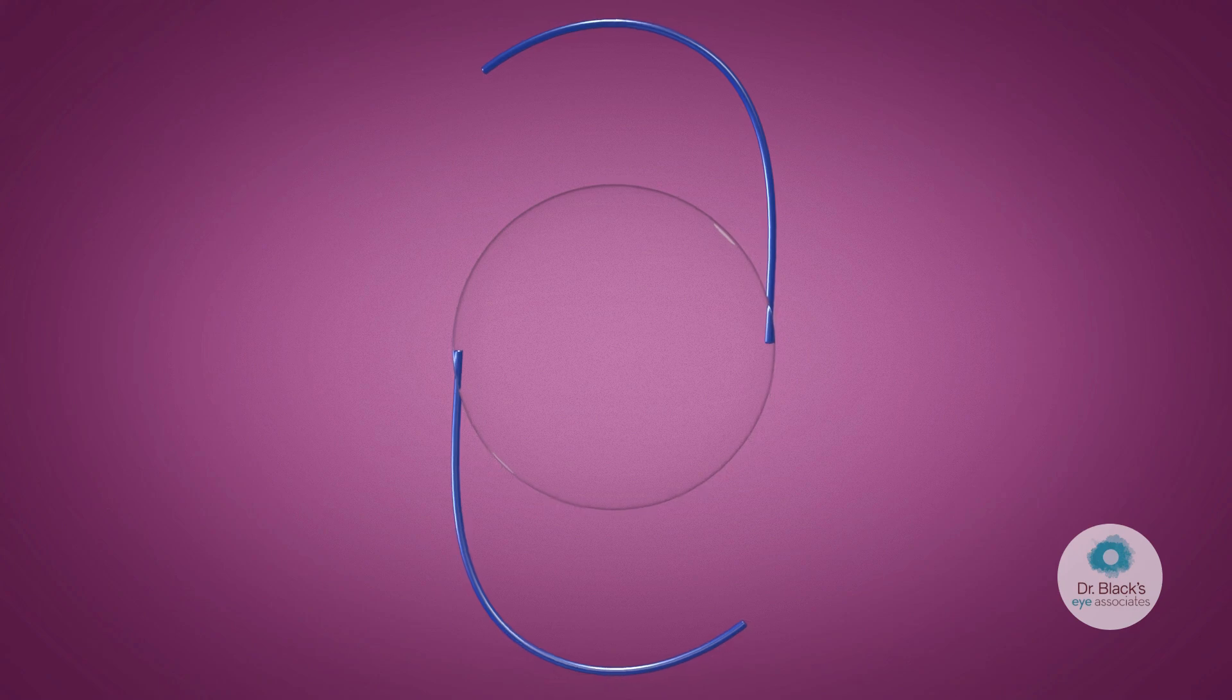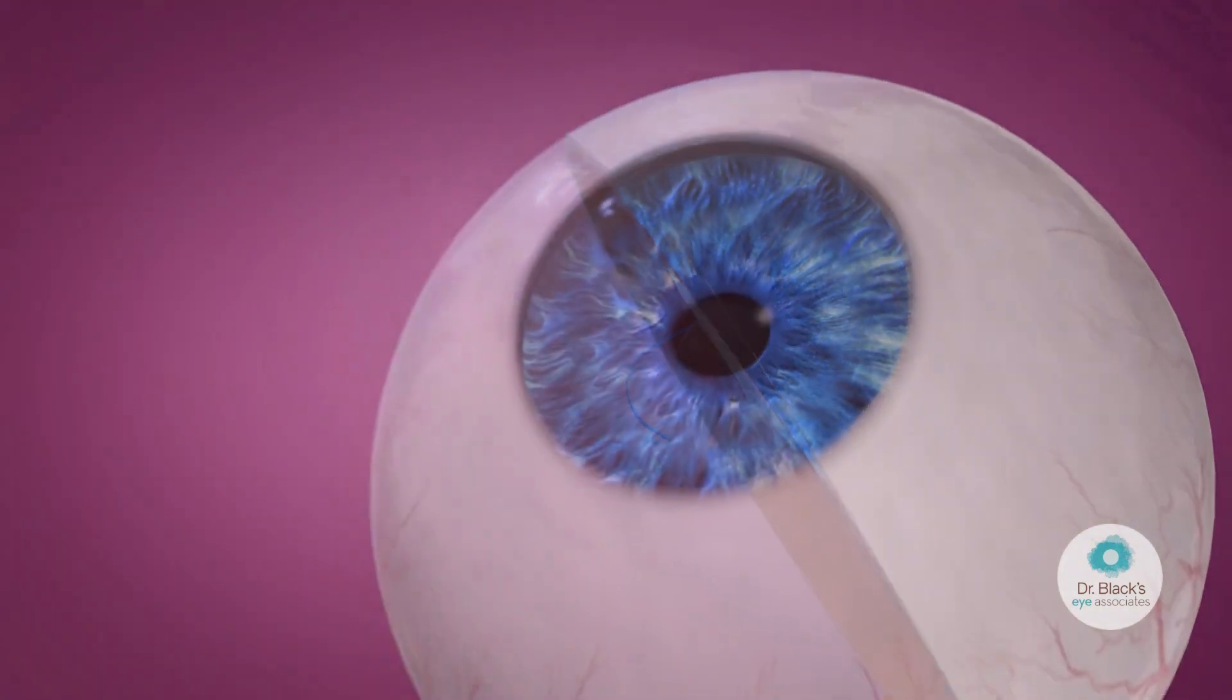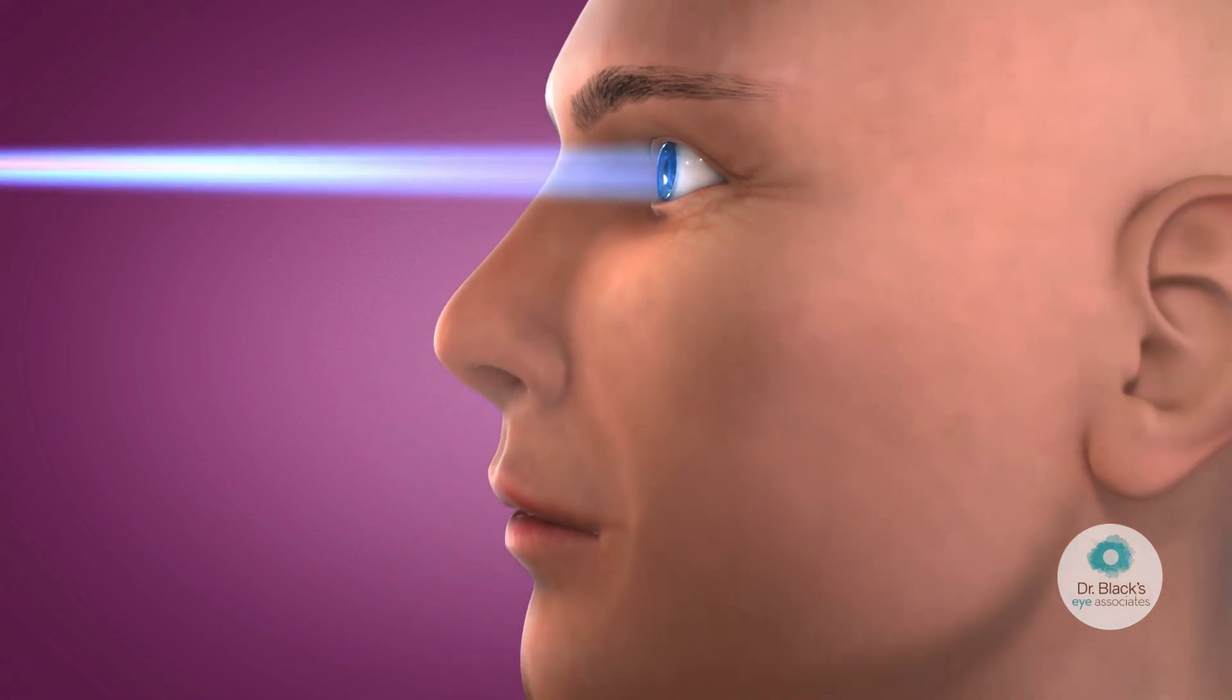RxSight's light-adjustable lens provides cataract surgeons with the ability to adjust the power of an intraocular lens after the lens has been implanted and the eye has healed, with an in-office light treatment that takes approximately 90 seconds.